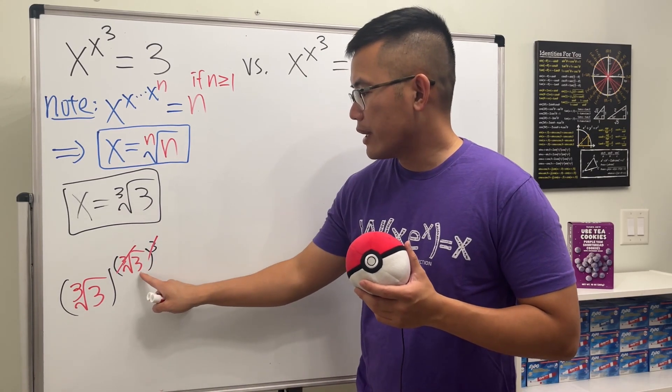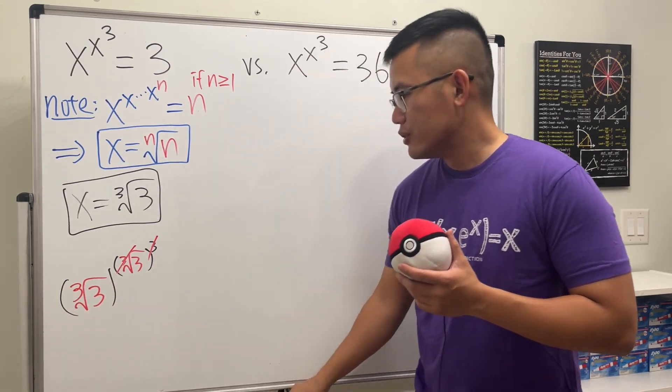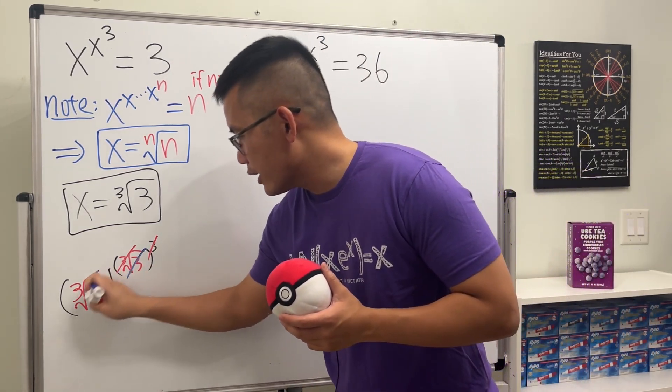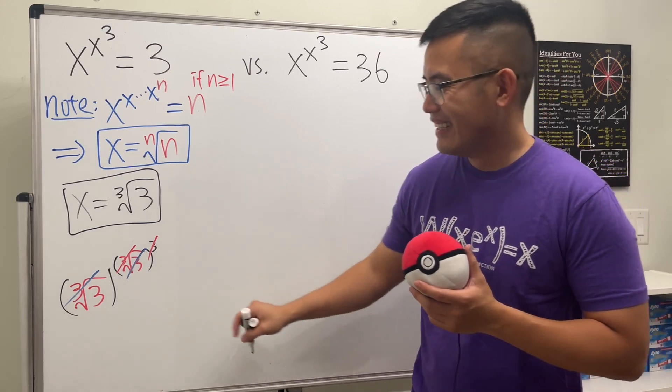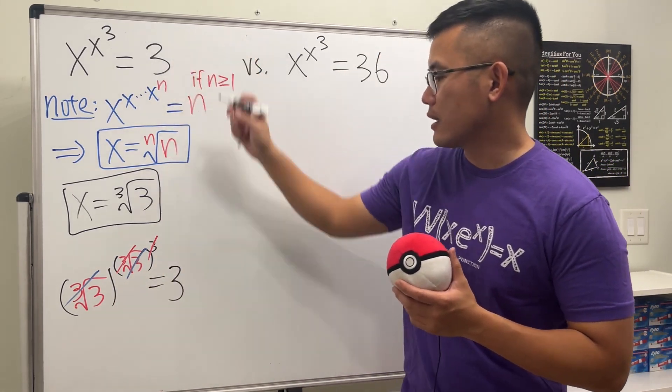And then whenever we have to work this out, we actually look at this exponent here first. So just ignore that. You see that we have a cube root and this is the third power. They cancel.